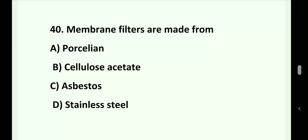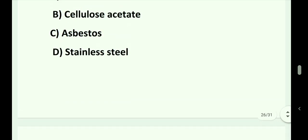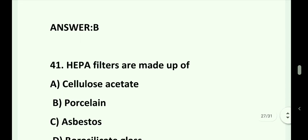Question number 40. Membrane filters are made from: Option A. Porcelain. Option B. Cellulose acetate. Option C. Asbestos. Option D. Stainless steel. Answer is Option B. That is cellulose acetate.